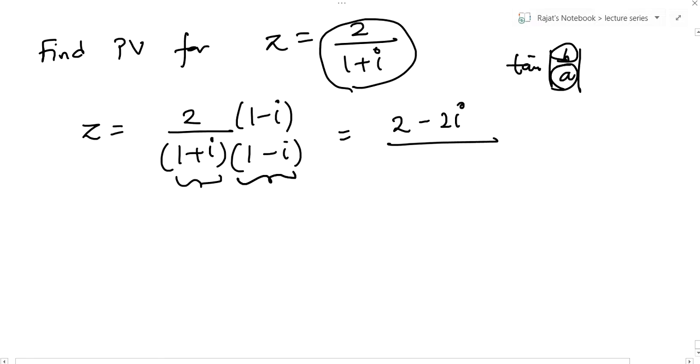Any complex number when multiplied by its conjugate, we get the real part of complex number squared plus imaginary part squared. This will be 2, so we get 1 minus i upon 2, which is 1 minus i.